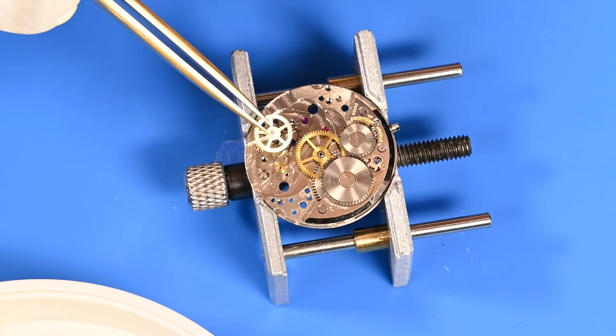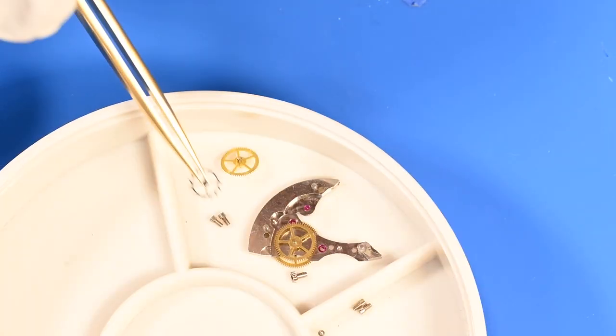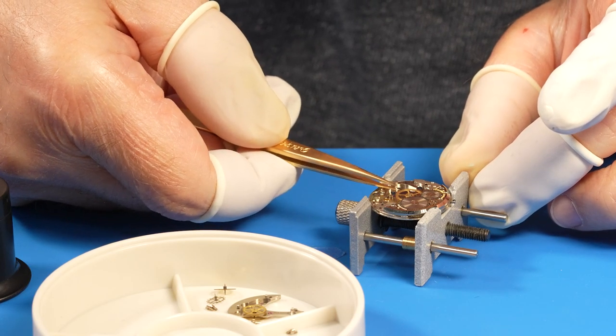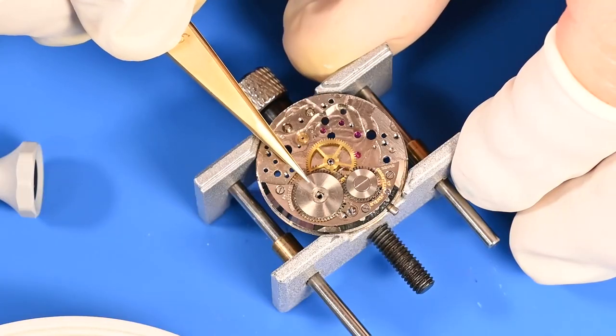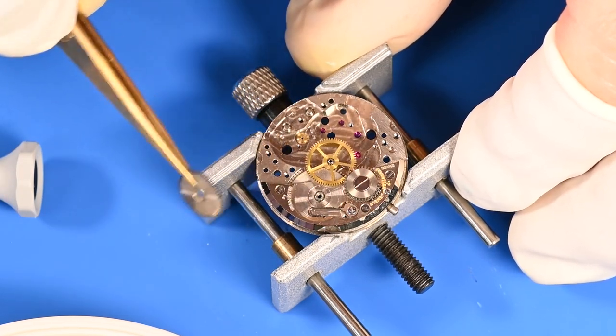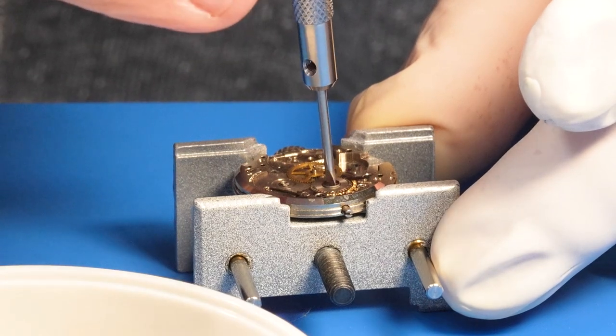I'm removing the loose wheels, and I'll come back for the trapped center wheel after removing the crown wheel and ratchet wheel. And there he is, and we can see the click spring underneath. And he's nice and dirty. Yes, it is a reverse thread.